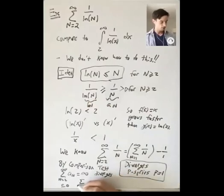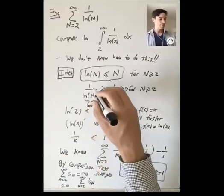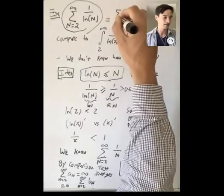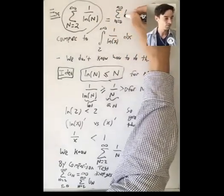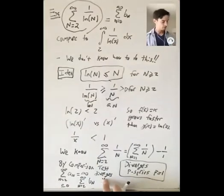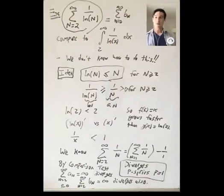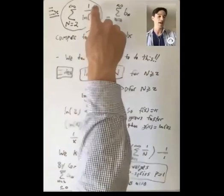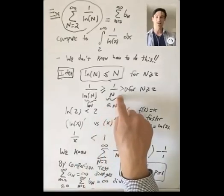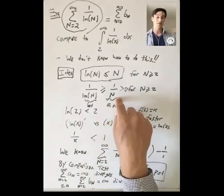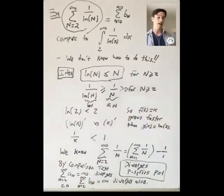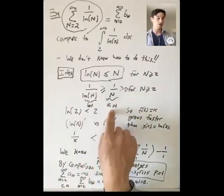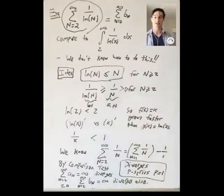Therefore the sum from n=2 to infinity of b_n — which is 1/ln(n), the series we care about — diverges also. To summarize: we first tried the integral test but got stuck with an integral we couldn't do. Instead, we compared 1/ln(n) to 1/n, a sequence we know well. That series is a p-series with p=1, so it diverges, and because the smaller series diverges, the comparison test tells us the bigger series diverges as well.